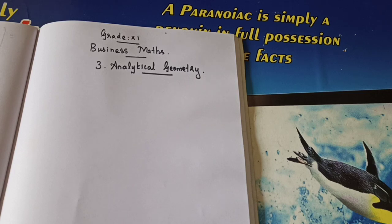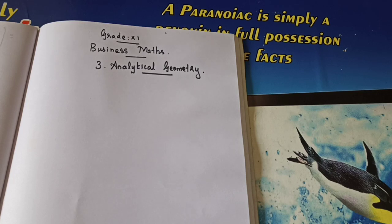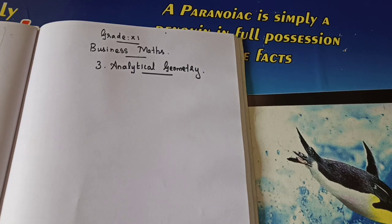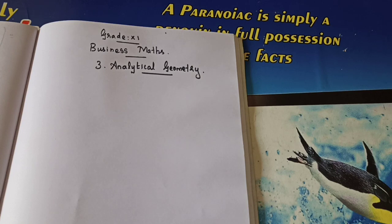Let's understand the word 'geometry.' Geometry is a word derived from 'geo' meaning land and 'metron' meaning measuring. So the need of measuring the land is the origin of geometry. Analytical geometry is used in the aircraft industry — especially when dealing with the shape of an airplane fuselage. That is all in your book. Let's move to the first section.